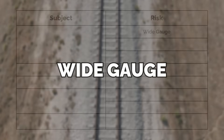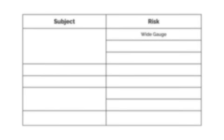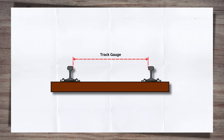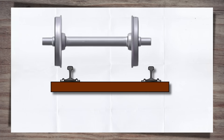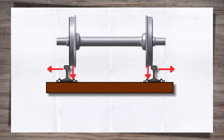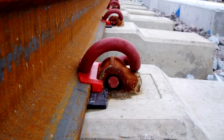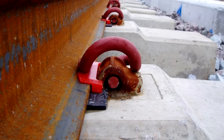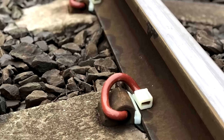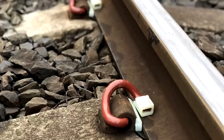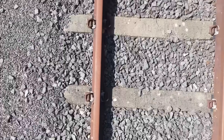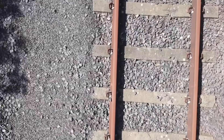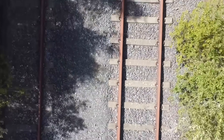The first risk on our list is wide gauge. Gauge is the distance between the rails on which the train wheels run. If the distance between the rails gets too large, the wheels will slip off the rails and the train will drop into the gap. In the UK, this gap is commonly known as the forefoot. For wide gauge to become a real risk, there has to be a number of failures in a short length. A single broken sleeper or housing isn't going to be an issue — ten in a row, on the other hand, is another story.